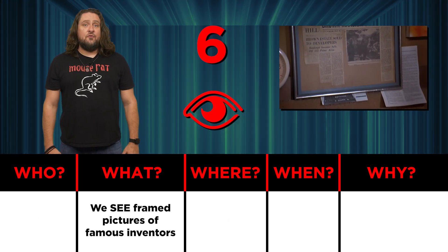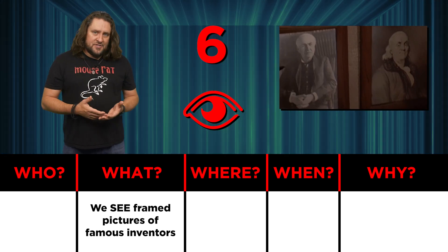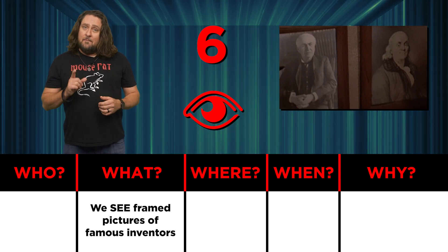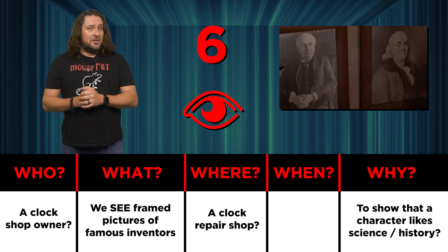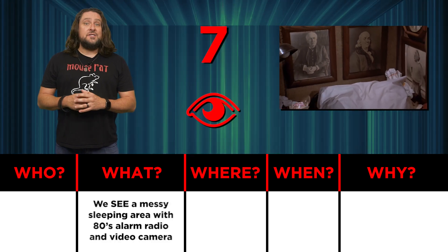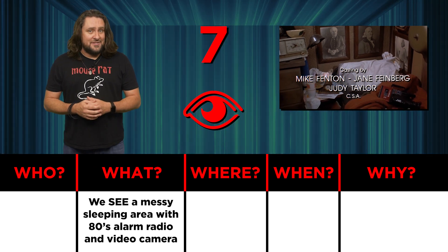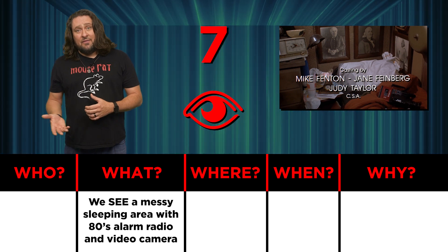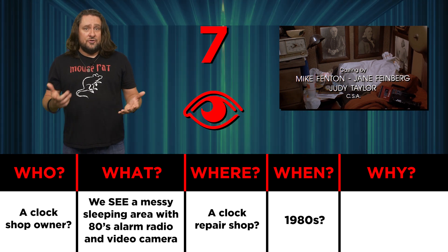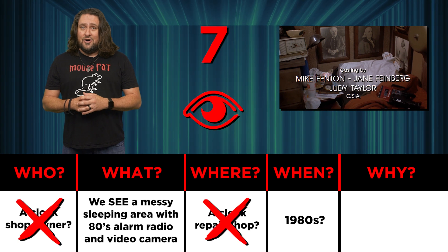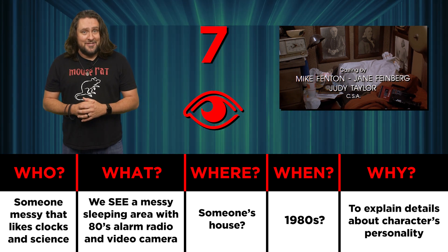Number six, we see framed pictures of famous inventors. Even if you don't immediately recognize them as inventors, most people would at least understand that they're historical figures. Probably that the person involved admires them or has similar interests. Number seven, we see a messy sleeping area with a radio alarm clock and an old school video camera, both consisting of 1980s technology. Aside from giving us information about the possible time setting, it would also be a little jarring for someone's bed to be out in the open on the showroom floor at a clock repair shop. So does that mean this is someone's house? If it is, I'm guessing they're disorganized and very interested in clocks.